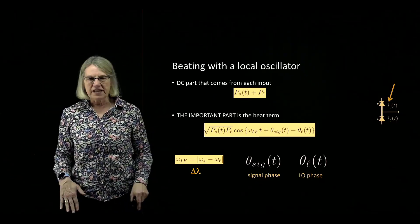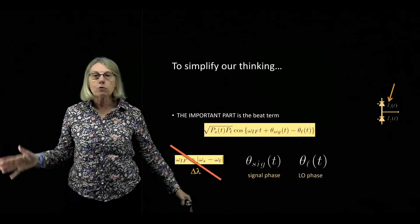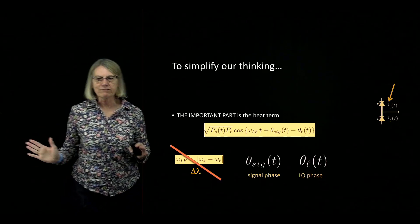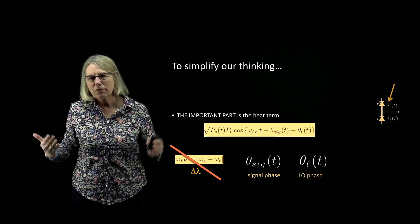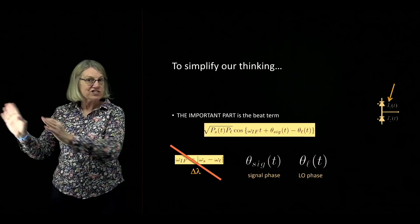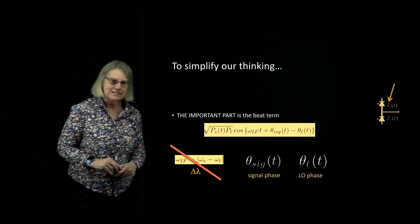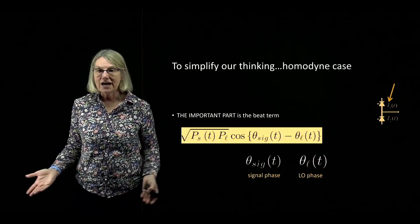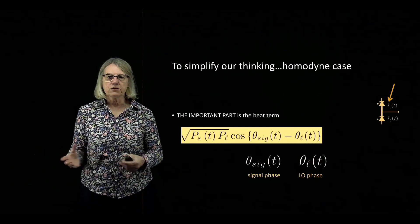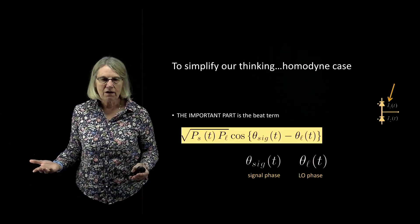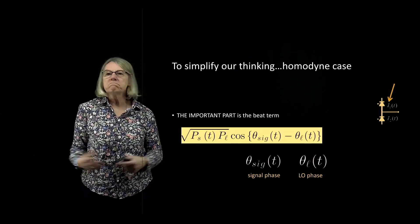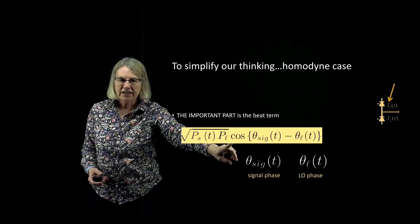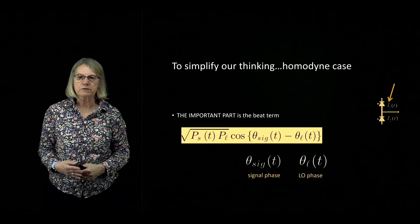Let's simplify our thinking. Suppose we actually have a local oscillator exactly aligned with the wavelength of the signal. In practice this wouldn't be exactly so, but in digital signal processing we'll be able to take care of any difference. Sometimes we call that the homodyne case. For instance, if you're doing an experiment in the lab using the same source for both, they could be very close indeed.